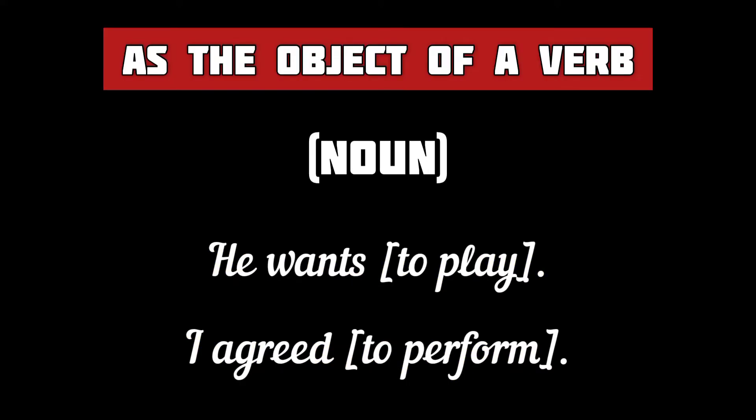An infinitive may also come as the object of a verb in the sentence — in such a case, it is a noun. For example: 'He wants to play.' Here 'to play' is an infinitive which serves as the object of the verb 'wants.' 'I agreed to perform.' Here 'to perform' is an infinitive that is the object of the verb 'agreed.' In both these sentences, the two infinitives are used as nouns.